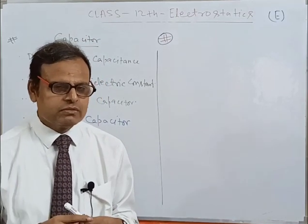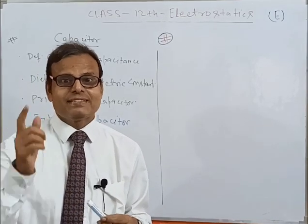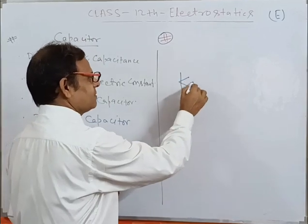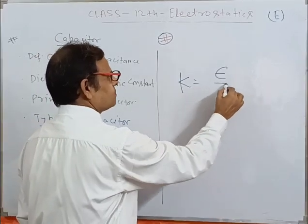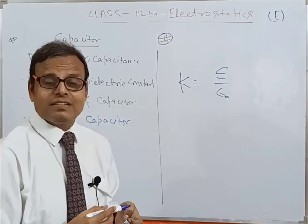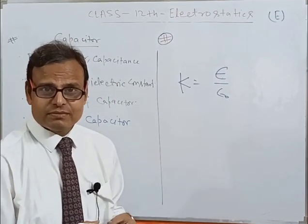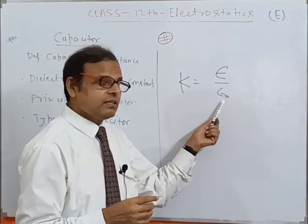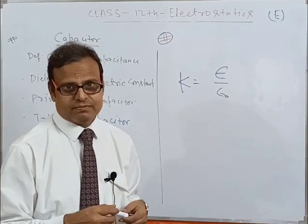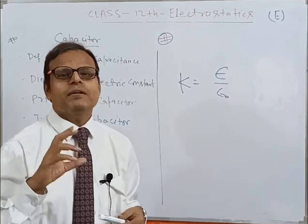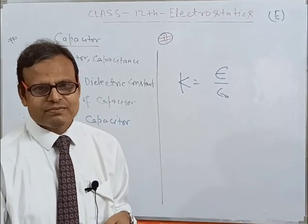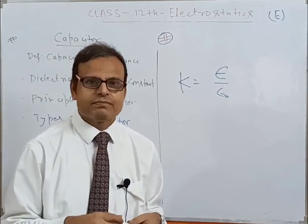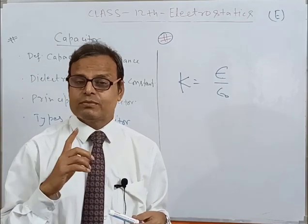Now the important question is: what is dielectric constant? Dielectric constant is the ratio of permittivity of the substance — of the material — to the permittivity of free space. And permittivity is the nature of the dielectric medium.